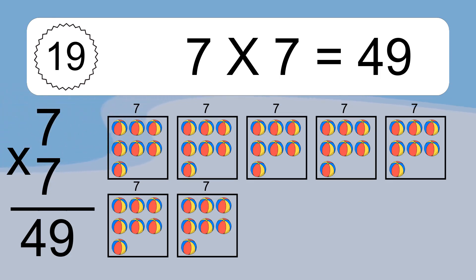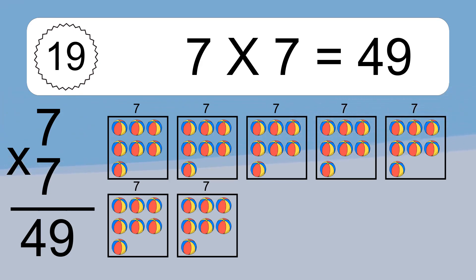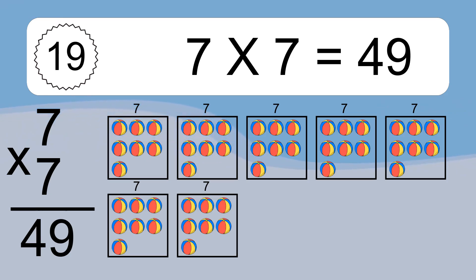We have 7 boxes, and each box has 7 colorful balls inside. If you count all the balls in all the boxes together, you will have 7 times 7 balls. This equals 49 balls.